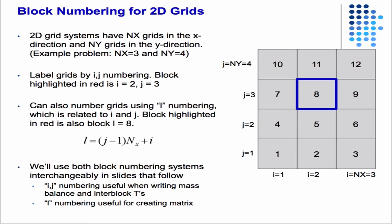Sorry, you'd have i, j and i plus 1, j. So you just need those two arguments to be able to compute the interblock transmissibilities.